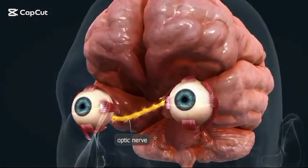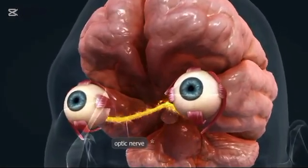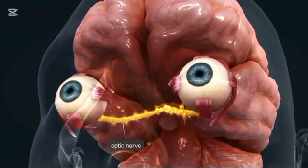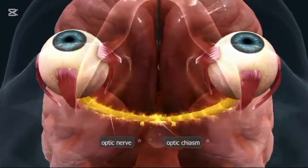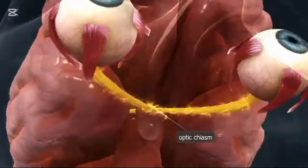The eye, our window to the world. It's an organ that detects light and sends signals to the brain, allowing us to see. Light enters through the cornea, passes the pupil, and is focused by the lens onto the retina.